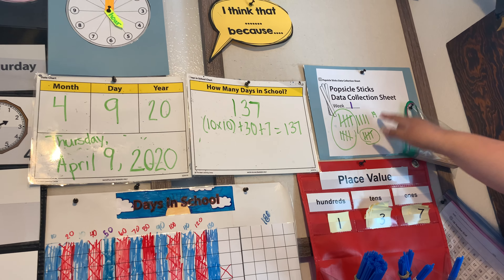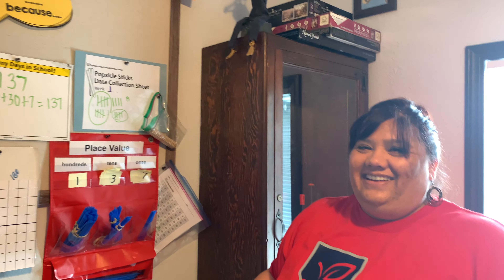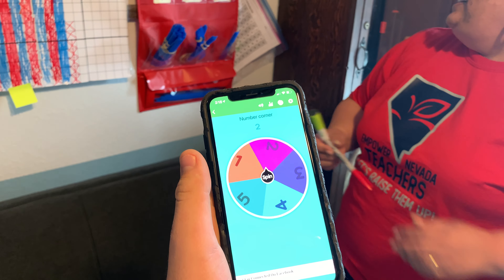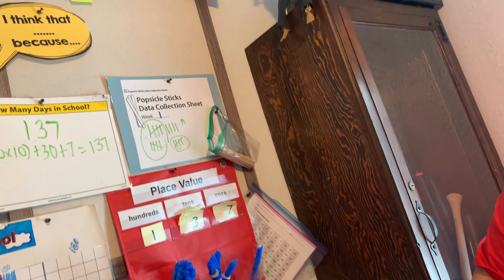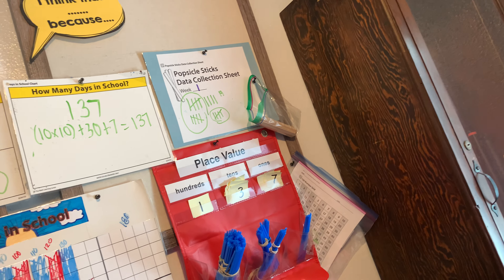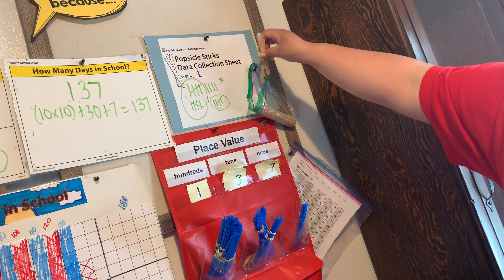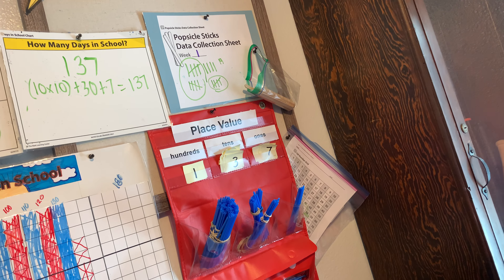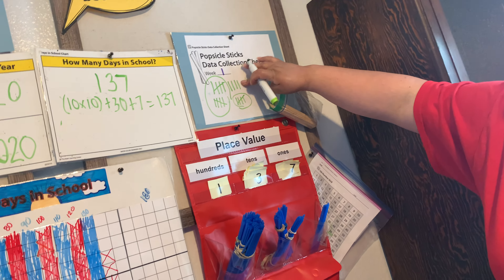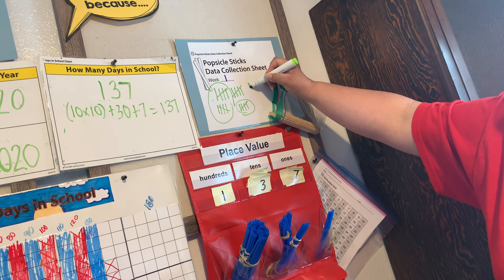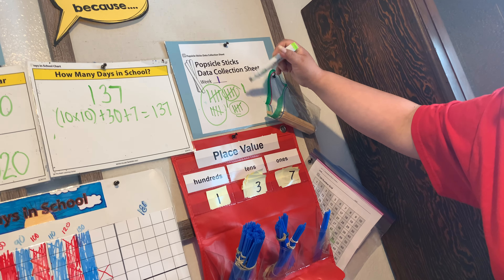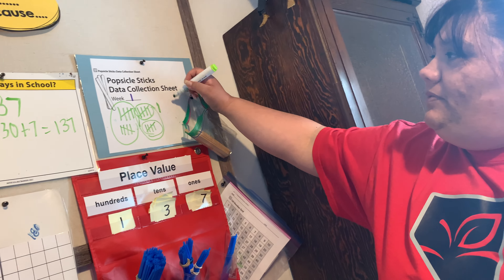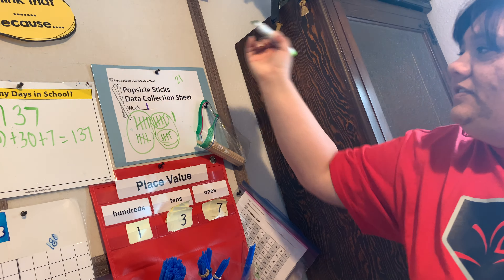I'm thinking about yesterday — we had 19 popsicle sticks. We're going to add two more to the number 19, and think about how many we have now. I'm going to add a tally there and one there. So now I have two groups of 10 and one 1 — your answer should have been 21.